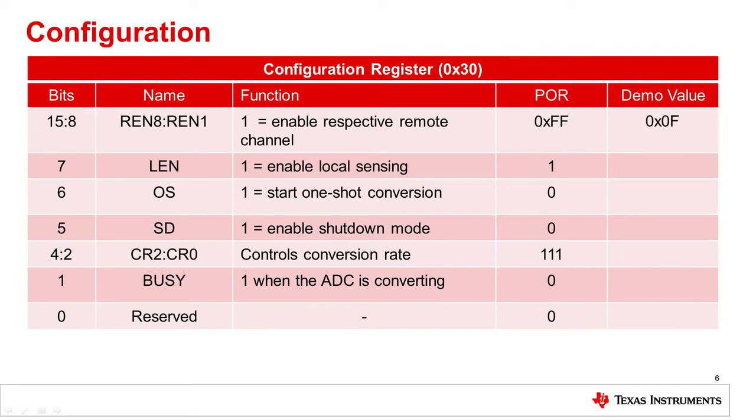Bit 7 enables or disables the local temperature sensing of the TMP468. For the demo, we'll enable the local sensor by writing a 1 here.